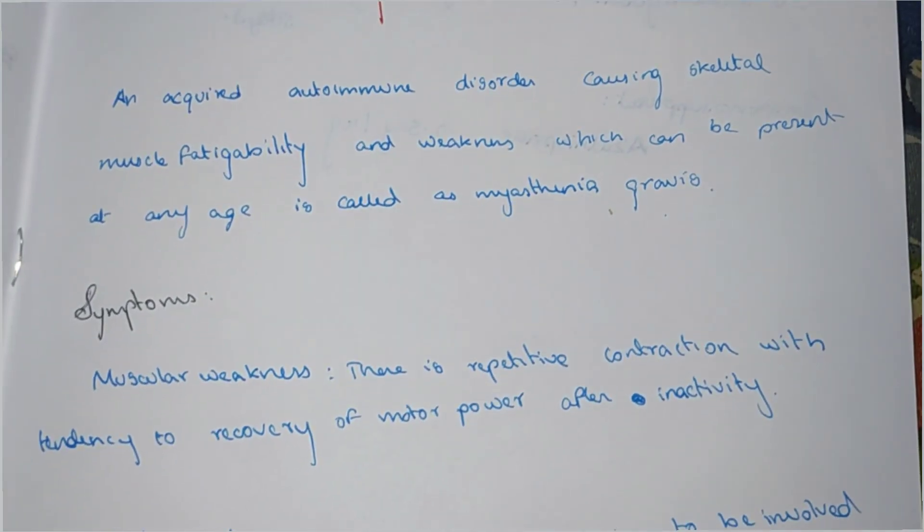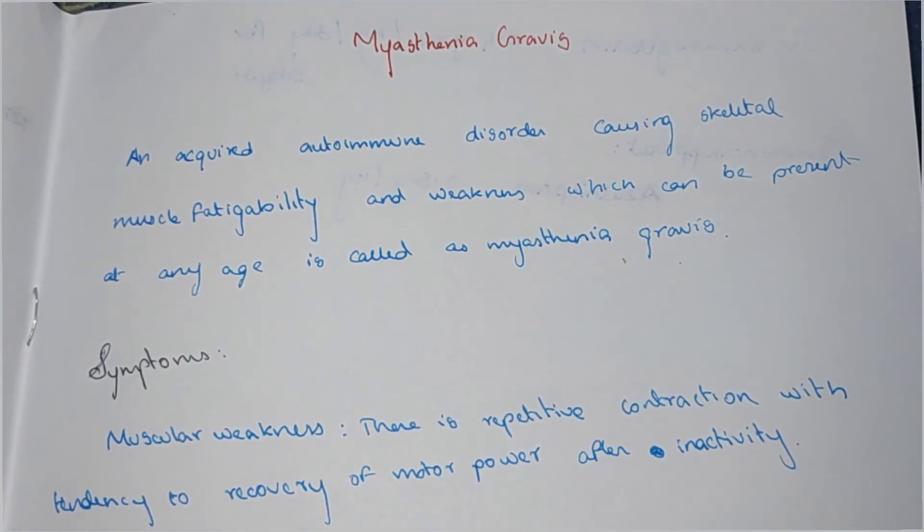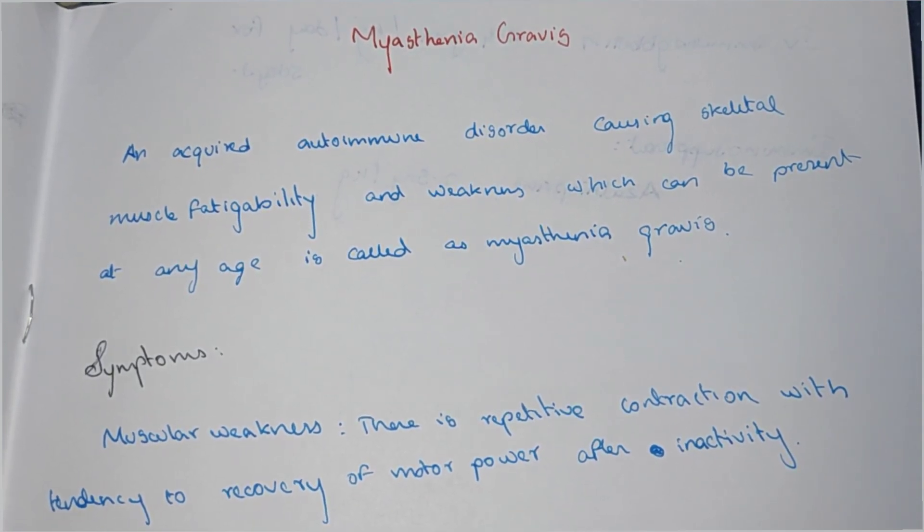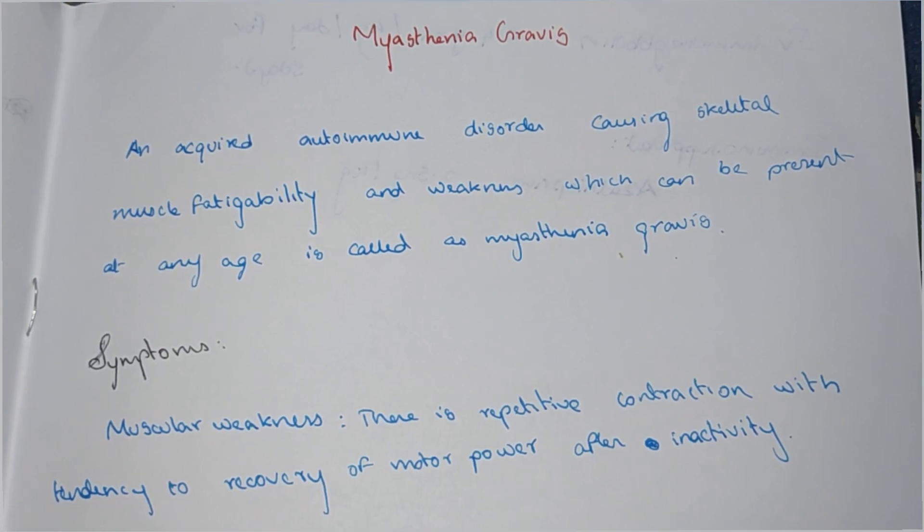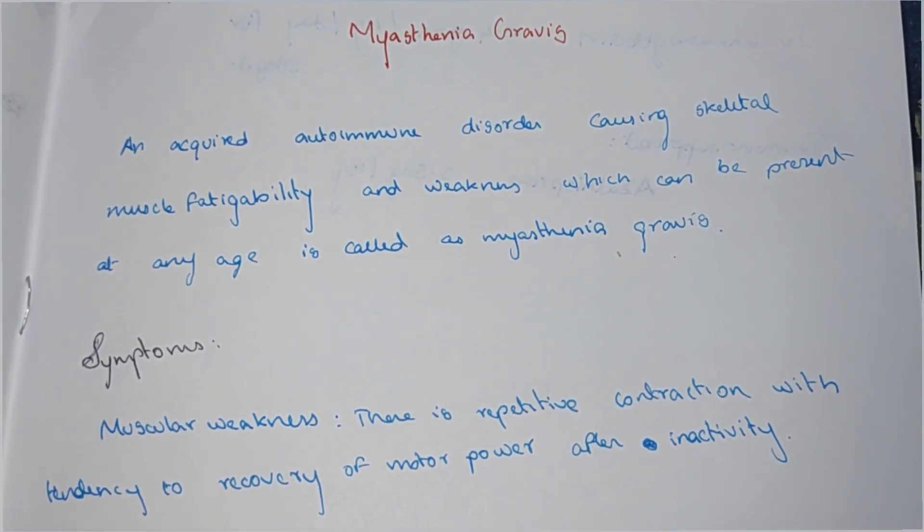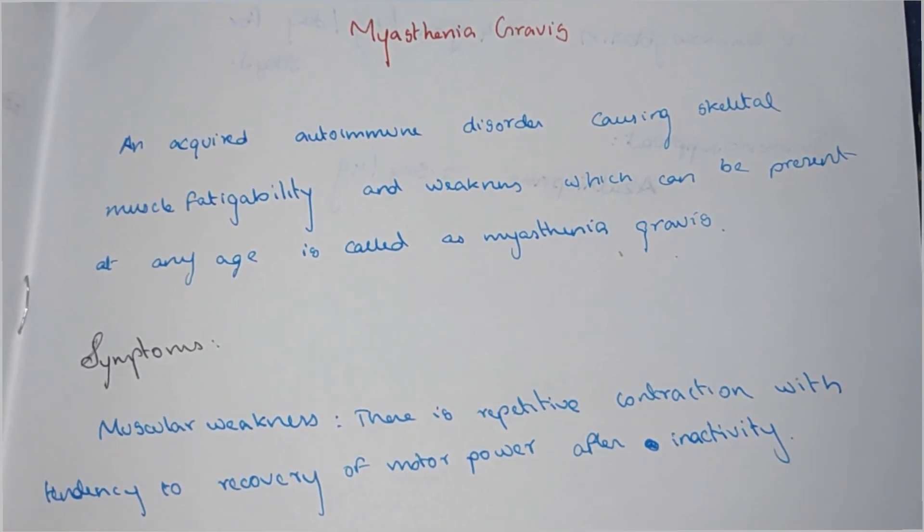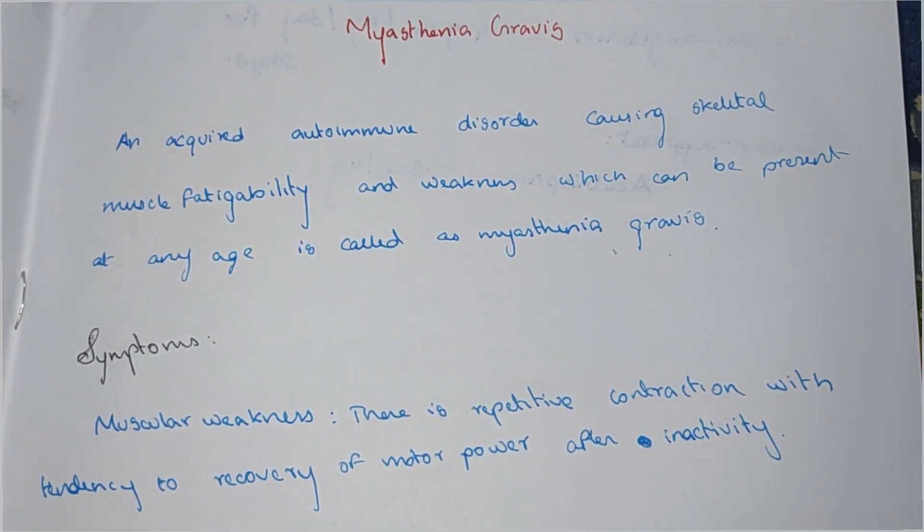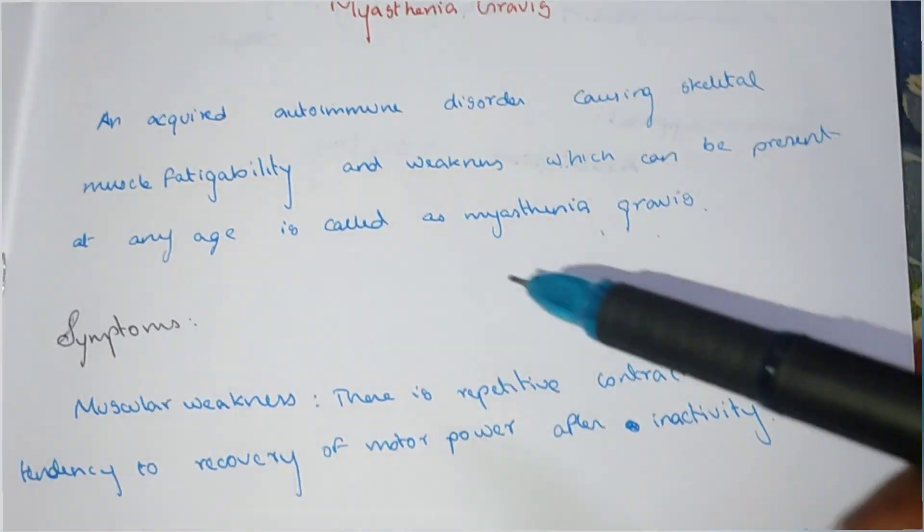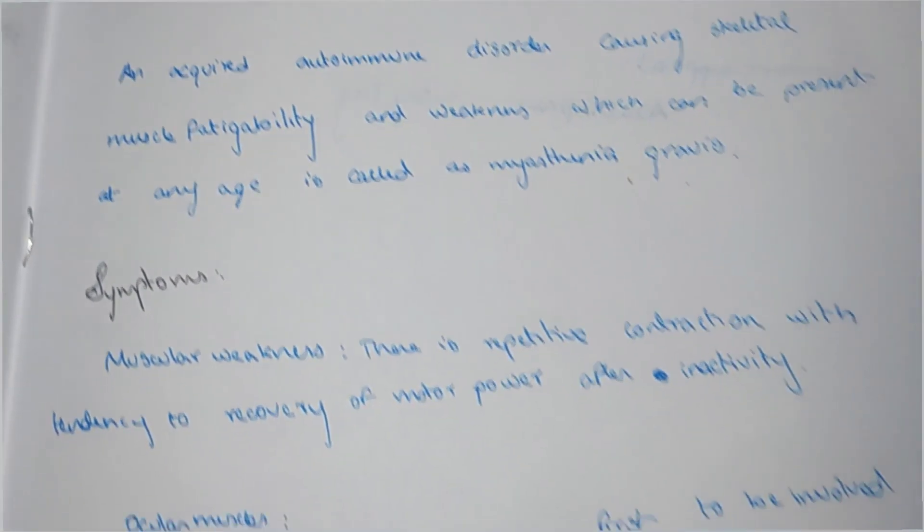Myasthenia gravis can be present at any age. It is an autoimmune disorder affecting skeletal muscles, causing fatigue and weakness at any age.